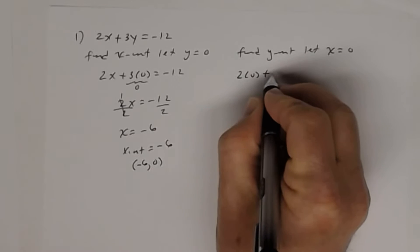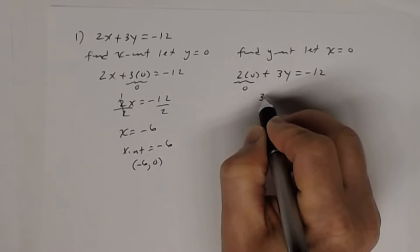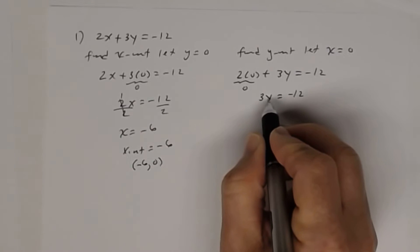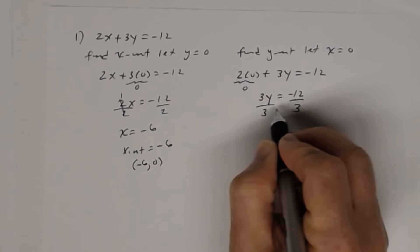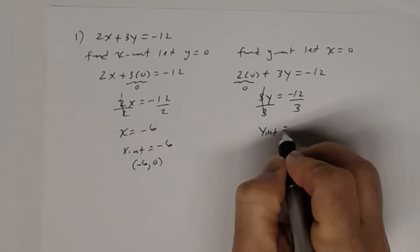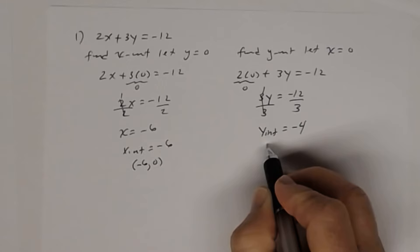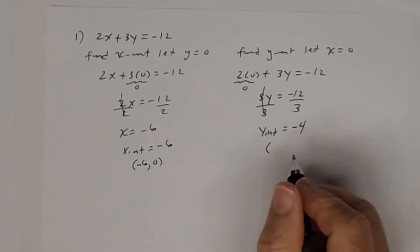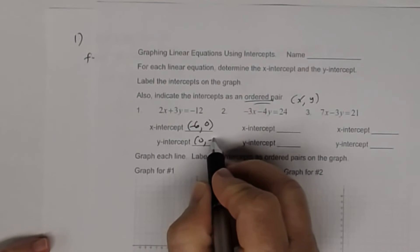So you get 2 times 0 plus 3y equals negative 12. 2 times 0 is 0, and 0 plus 3y is 3y. So I get 3y equal negative 12. The coefficient of y is 3, meaning y is being multiplied by 3. The opposite of multiplication is division, so I'm going to divide both sides by 3. 3 divided by 3 is 1, and negative 12 divided by 3 is negative 4. As an ordered pair, x is 0 and y is negative 4, so that's 0, negative 4.